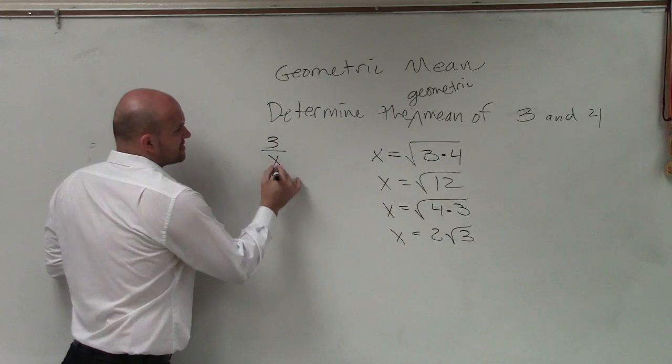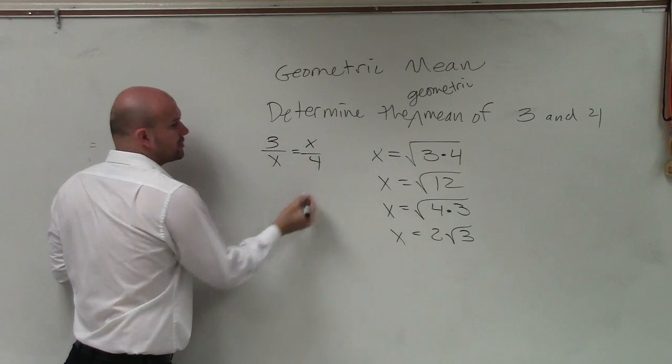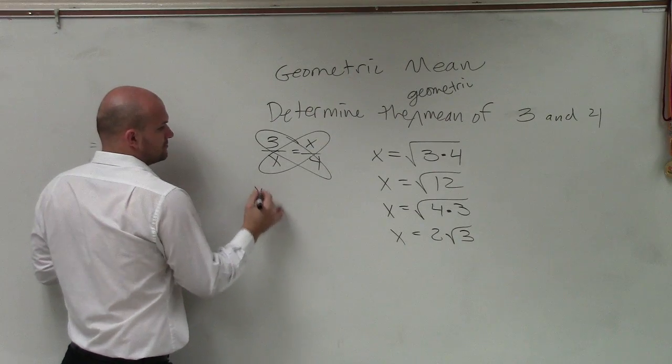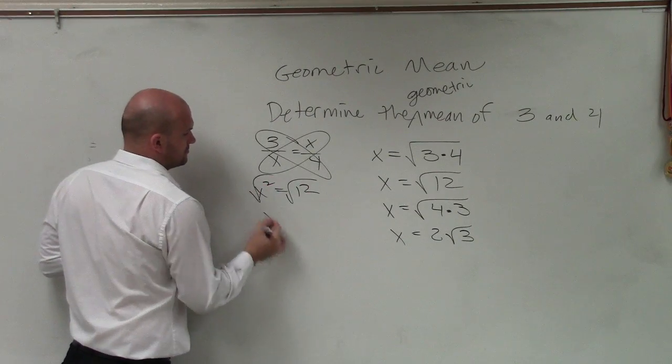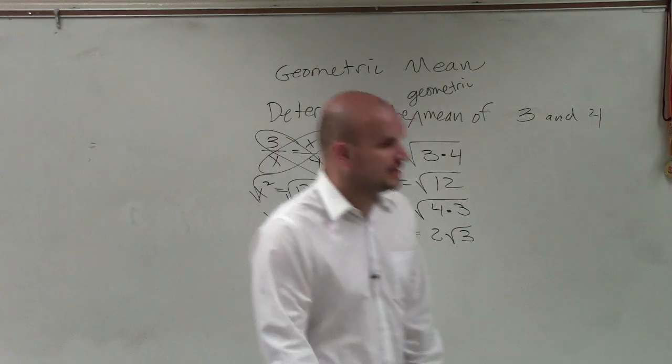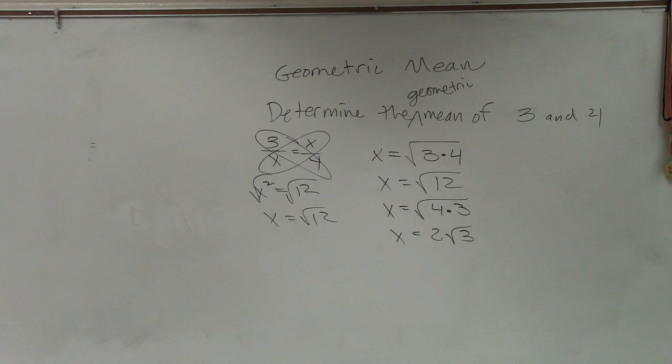It's 3 over x is equal to x over 4. You're cross multiplying. Yeah, it's exactly what you're doing. Same thing. OK. It's like 1.5. There you go. All right.